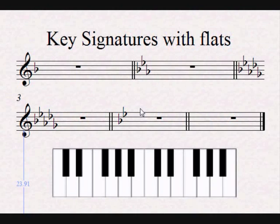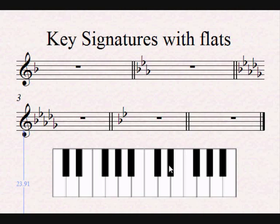If we want to find out what key a tune or song is written in by looking at a key signature written with flats, we need to look at the second last flat and see what note it is affecting. In this case, the second last flat is affecting the E. Therefore, this is written in E flat major, or the relative minor of E flat major — 1, 2, 3, 4 — C minor. So this is written either in E flat major or C minor.